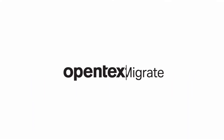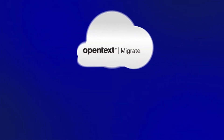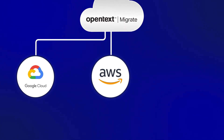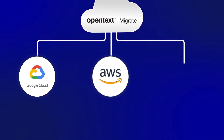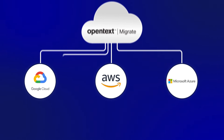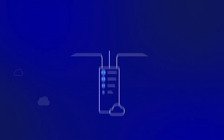Migrate's cloud management feature allows you to log into and orchestrate public cloud targets like Google Cloud, Amazon Web Services, and Microsoft Azure, as well as hybrid cloud offerings like AWS Outpost and Azure Stack.